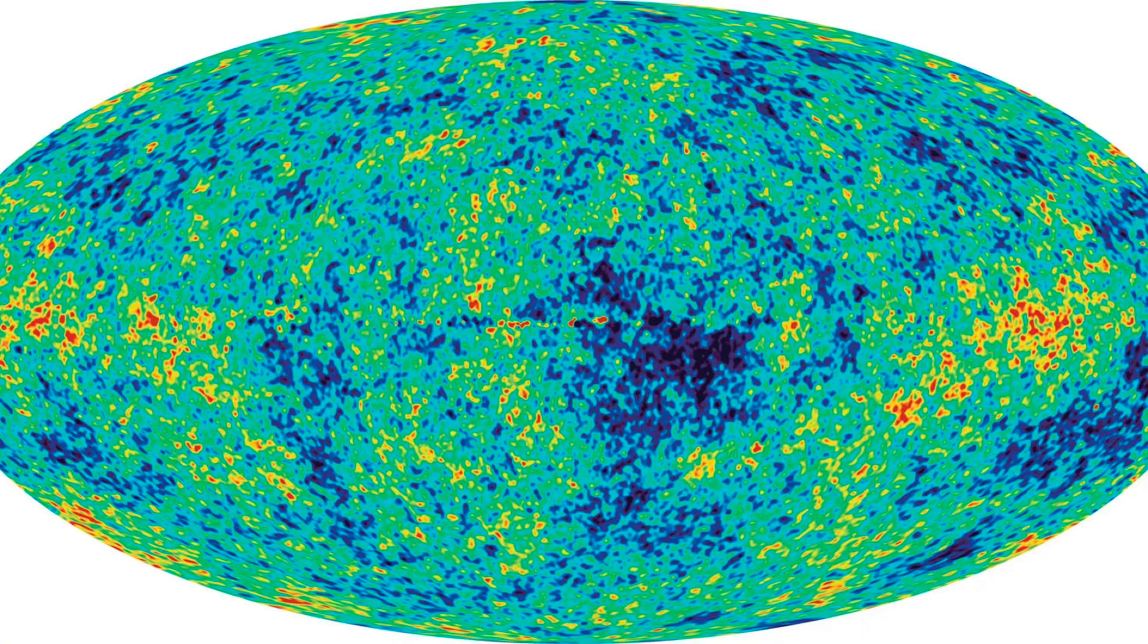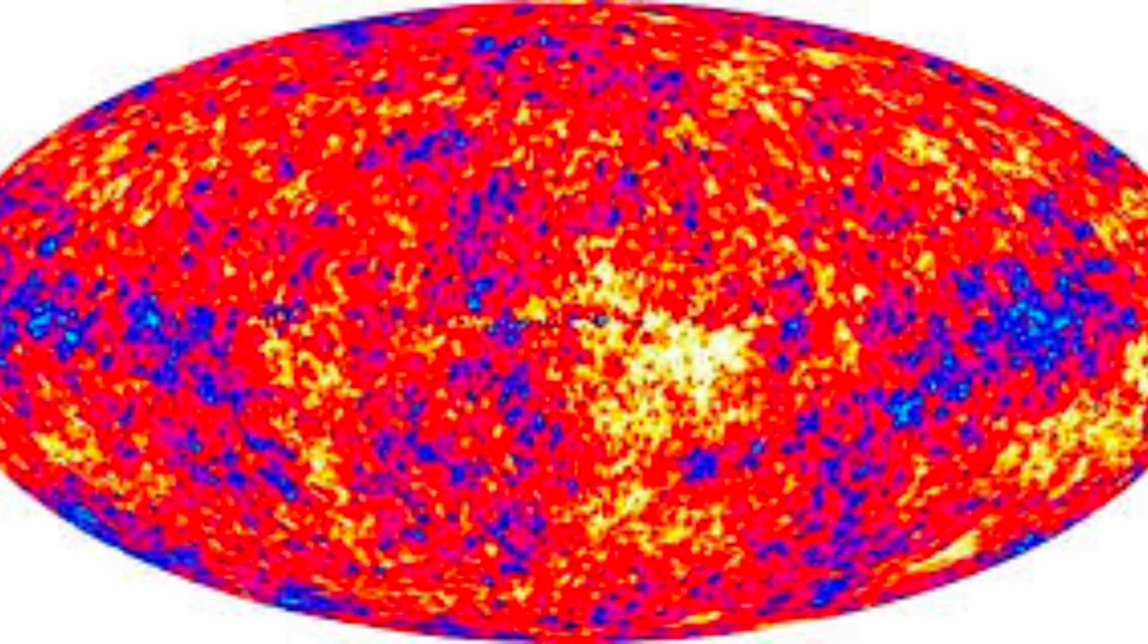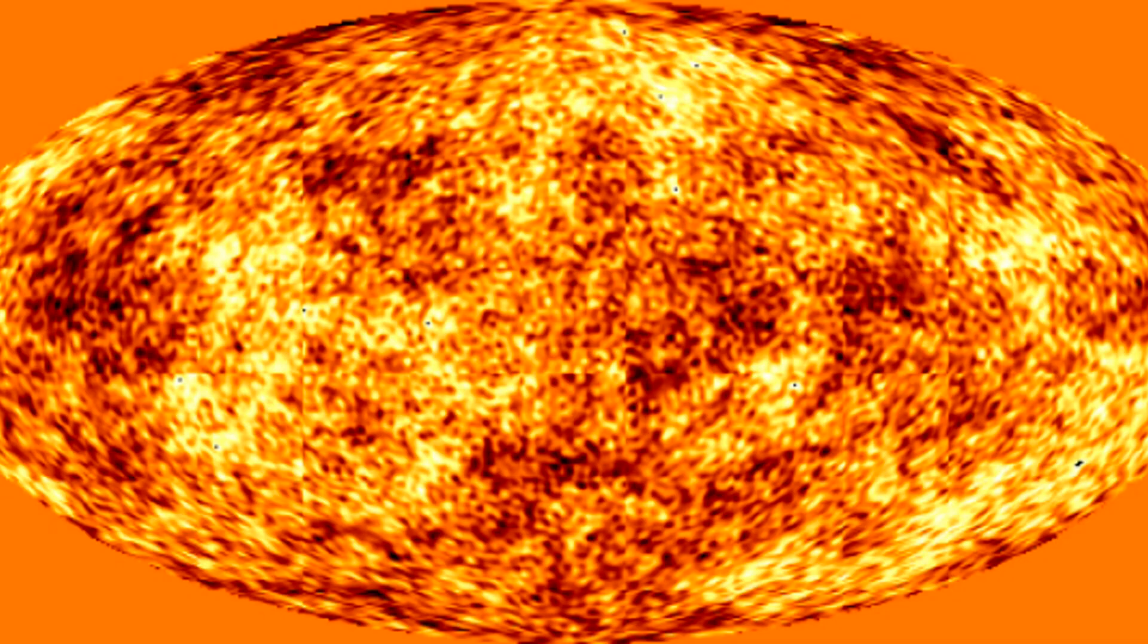The Big Bang Theory predicts that the universe should be filled with a uniform glow of microwave radiation, and this prediction was confirmed in the 1960s by the discovery of the cosmic microwave background radiation. This radiation is thought to be the residual heat left over from the Big Bang, and it provides a snapshot of the universe as it was around 380,000 years after the initial expansion.